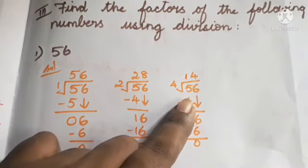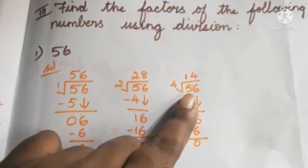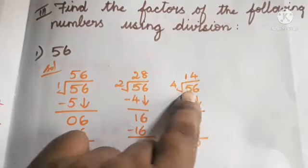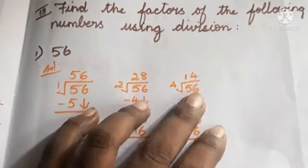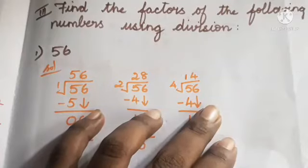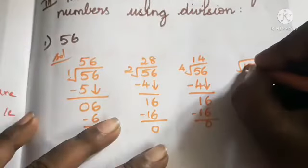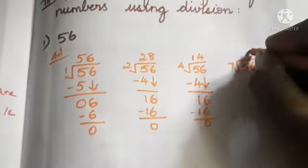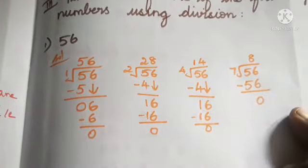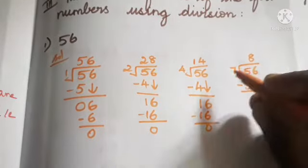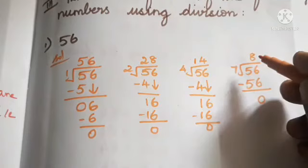Check 5: in the 5 times table, 56 is not a product — the ones place only ends in 0 or 5, and we won't get 56. Check 6: nine 6s are 54, so remainder is 2 — not possible. Check 7: eight 7s are 56; 56 minus 56 is 0, so 7 and 8 are factors of 56. Dividing by 8 gives quotient 7 — same factors, no need to repeat.